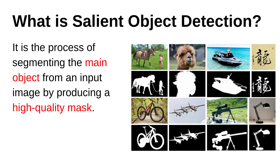The next question is: what is salient object detection, or SOD? It is the process of segmenting the main object from the input image by producing a high quality mask. Here you can see some samples where you have images and the high quality mask. For example, if you see this animal, we have its hair — with this high quality mask we are able to extract the entire object along with its fine details, which is really essential in multiple applications.